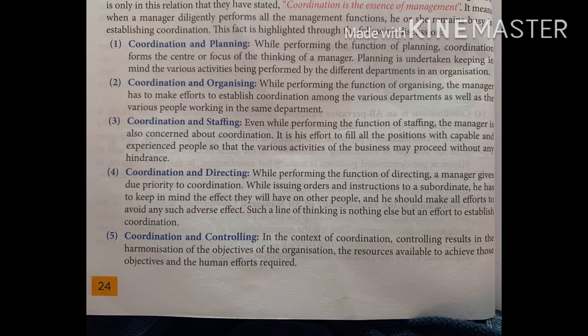Second: coordination in organizing — we require coordination between the resources of an enterprise and the activities to be performed, and among authority, responsibility, and accountability. When we give a person responsibility, we must also give them authority, because without authority responsibility cannot be fulfilled. For example, if a supervisor is given responsibility, they are also given authority to divide work among workers. Third: coordination in staffing — we coordinate between the skills of workers and their jobs, and between the efficiency of workers and their compensation. A more efficient employee gets a higher salary.